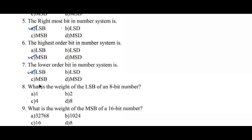Question number seven: the lower order bit in a number system is the least significant bit, so option A is the right answer. Question number eight: what is the weight of the LSB of an eight-bit number? The least significant bit has a weight of 1, hence option A is the right answer.